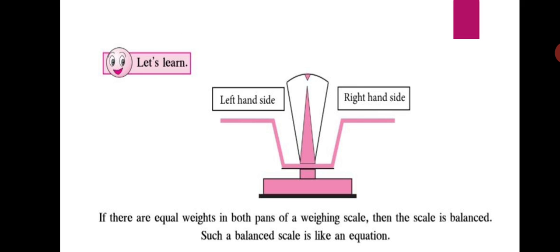If there are equal weights in both pans of a weighing scale, then the scale is balanced. Such a balanced scale is just like an equation. Whenever left hand side is equal to right hand side, we form an equation.